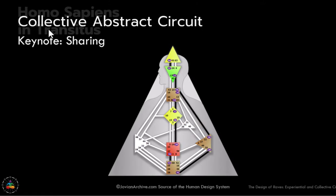Thinking about the abstract circuitry for Homo sapiens — what do we know about sensing? It's the sensing circuit. The two collective circuits in the human being are both about sharing. So we have the abstract and we have the logic, both about sharing. But the abstract, when it comes to those who carry an element of this in their design, it's sharing for sharing's sake — it's not personal. It's collective, which is why social media is so much fun for those who like to share.